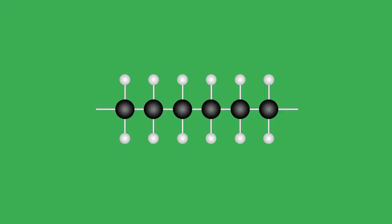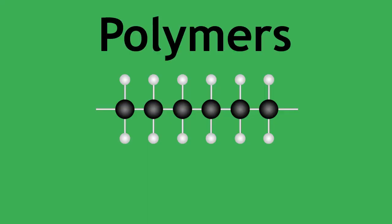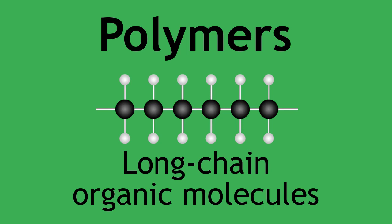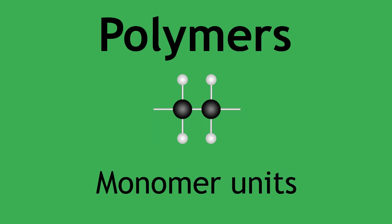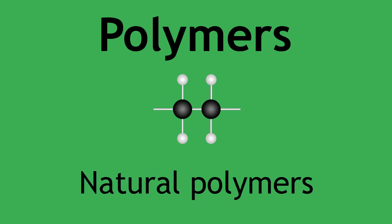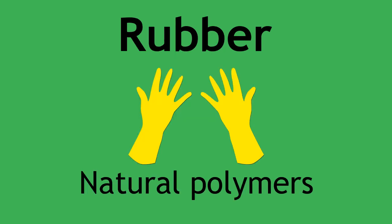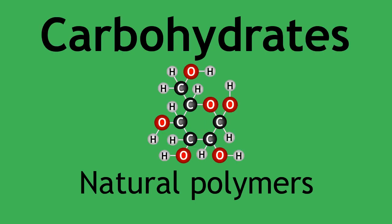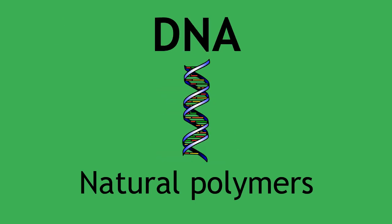As you now know, polymers are long-chain organic molecules made by repeating monomer units. There are a number of natural polymers in life, such as rubber, and even in our own body we have natural polymers such as proteins, carbohydrates and DNA, to name just a few.